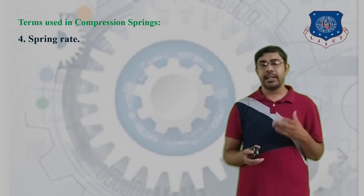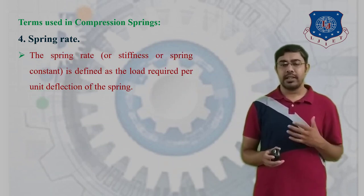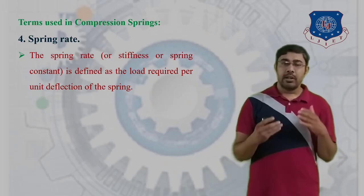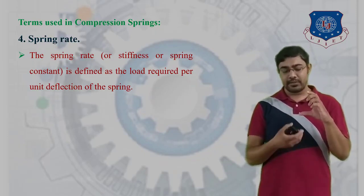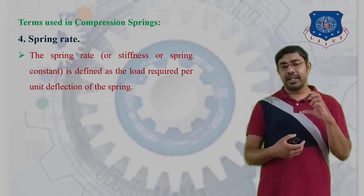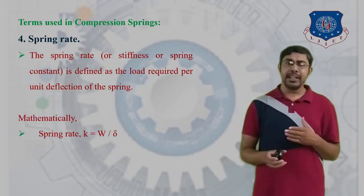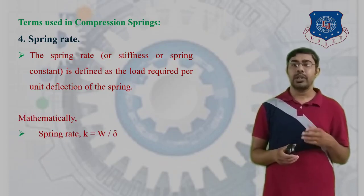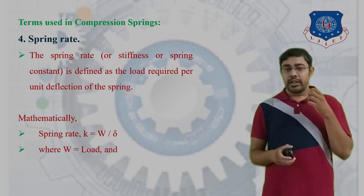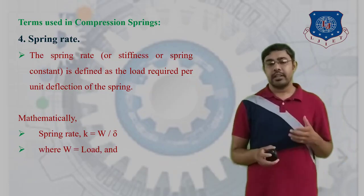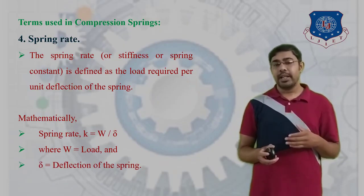The next terminology is spring rate or stiffness. The stiffness of a spring, also called the spring constant, is defined as the load required per unit deflection of the spring. Whatever load is required for unit extension or deflection of the spring is the spring constant. Mathematically, spring stiffness K = W/δ, where W is the applied load and δ is the deflection of the spring.